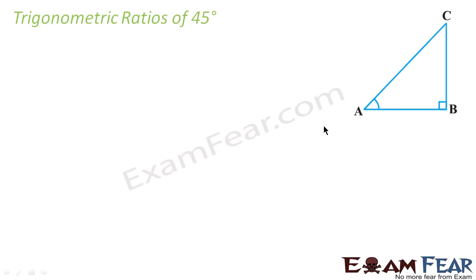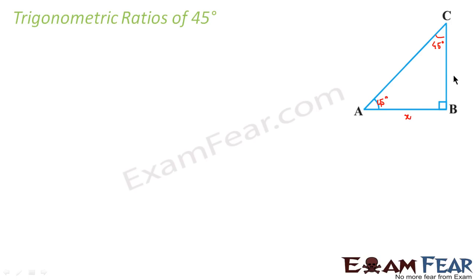Let's go for 45 degrees. So if this angle is 45 degrees and this angle is 90 degrees, then this angle will also be 45 degrees. Why? Because the sum of angles is 180. We already know one angle is 90, so the remaining two must sum to 90, meaning this angle has to be 45. If the angles are equal, the sides AB and BC will be equal. Let's assume the length of AB is x, so BC will also be x.